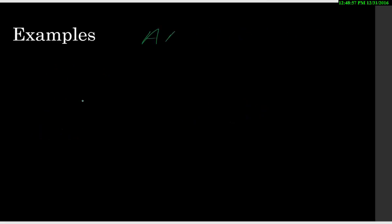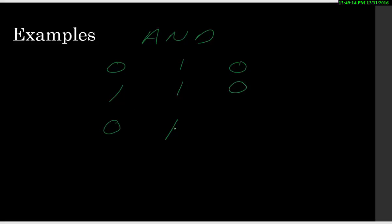I'm going to start with AND. When you AND two values together — say zero and one — you get a zero. When you AND two ones together, you get a one. Both have to be true. When you AND two zeros together, you get a zero. So both must be true for the outcome to be one, otherwise it will be zero. Those are the rules for the AND operator.